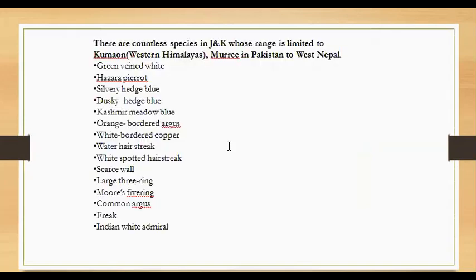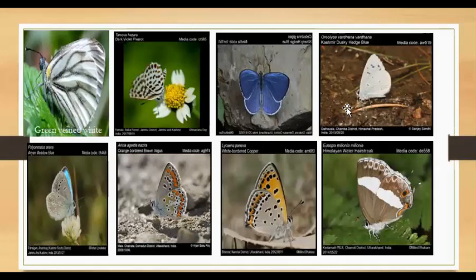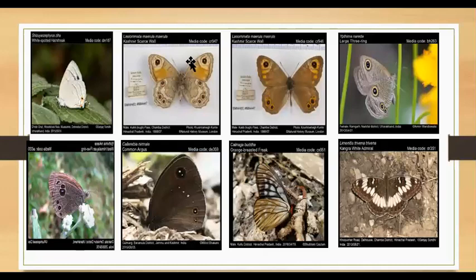I would like to talk about species with a range limited to the western Himalayas, from northern Pakistan to western Nepal. These include: Green-veined White, Hazara Pirate, Silvery Hedge Blue, Dusky Hedge Blue, Kashmir Meadow Blue, Orange-border August White, Border August, Malayan Water Hairstreak, White-spotted Hairstreak, Kashmir Scarce Wall, Large Three-ring, Common August Streak, and Indian White Admiral.